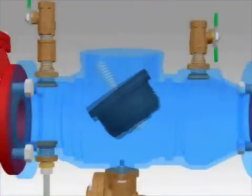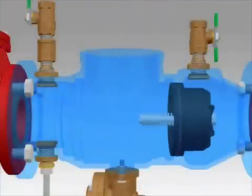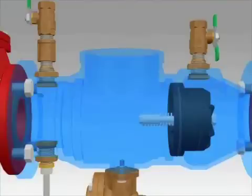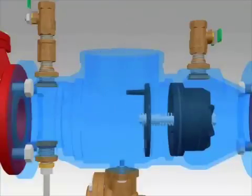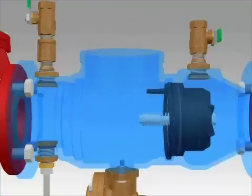After servicing the number 2 check, install it in the body making sure it is completely seated. The groove for the seat retainer should be completely exposed. Close the number 4 test cock to hold the check in place. Install the plastic retainer by inserting one end into the body groove and then sliding your hand around the face of the retainer, pushing it into the groove as you go.